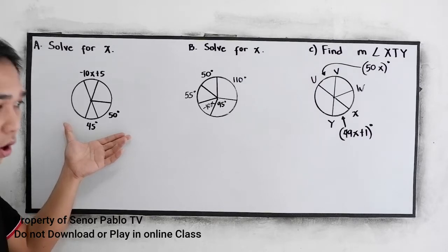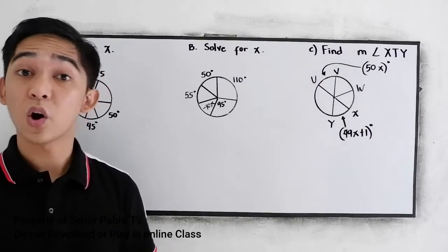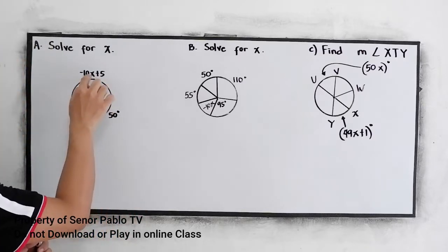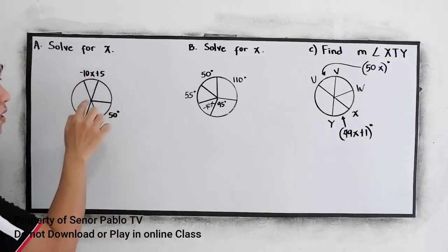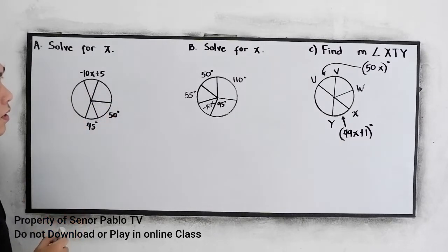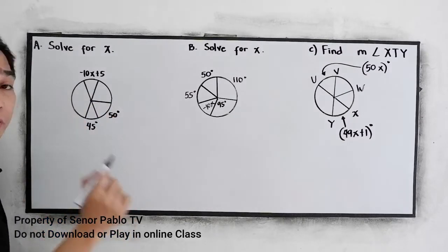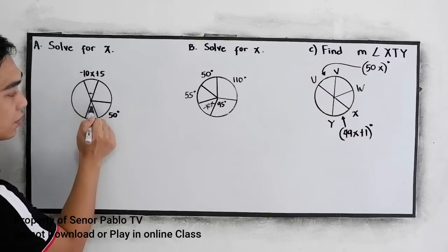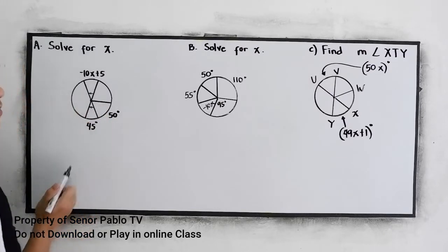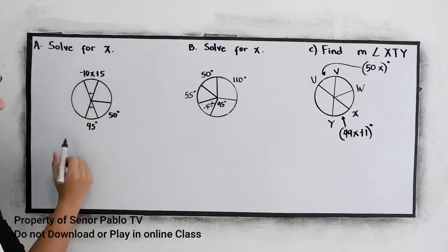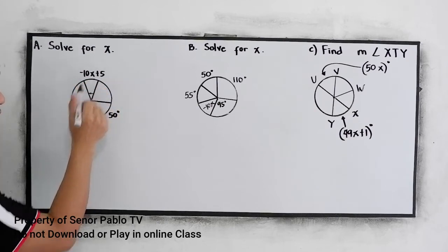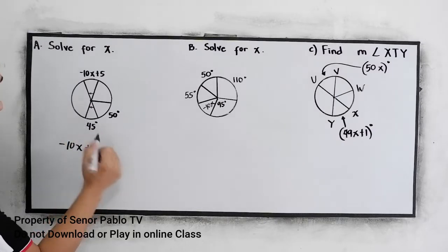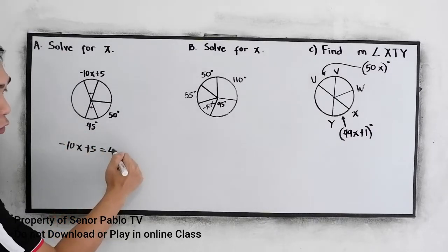Let us recall the different principles that we are going to use. The minor arc is equal to our central angle. So here, by vertical angles, this angle is equal to this angle. That means negative 10X plus 5 is equal to 45.